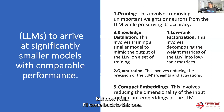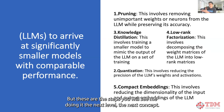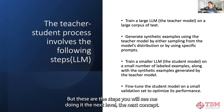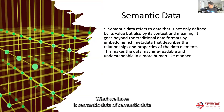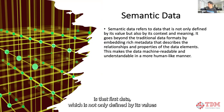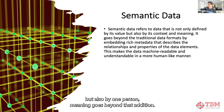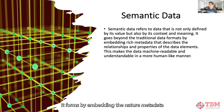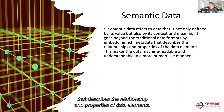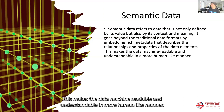I will come back to this, but these are the steps you will see me doing at the next level. The next concept is semantic data. Semantic data is referred to as data which is not only defined by its values but also by context and meaning. It goes beyond traditional data forms by embedding rich metadata that describes the relationships and properties of data elements.